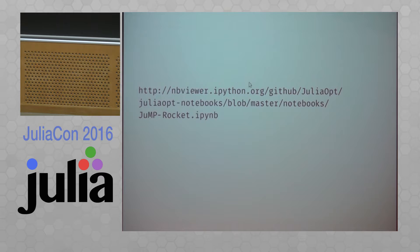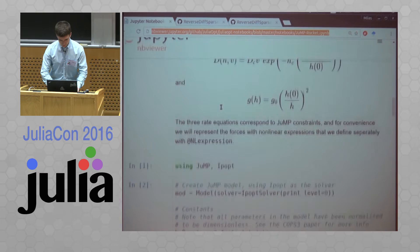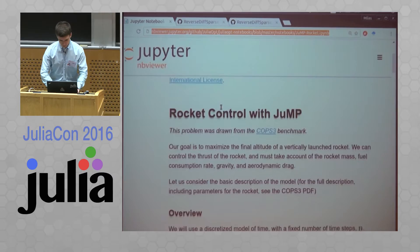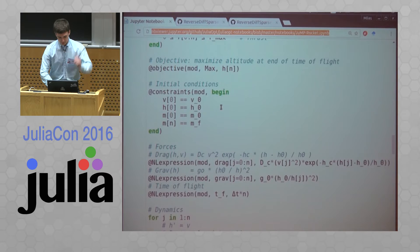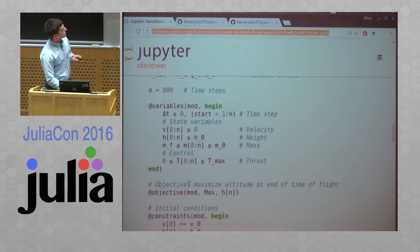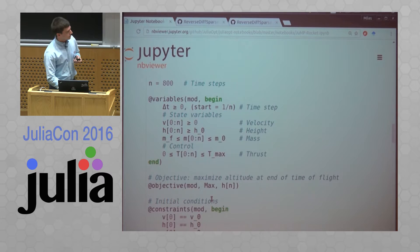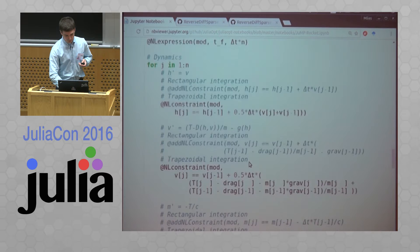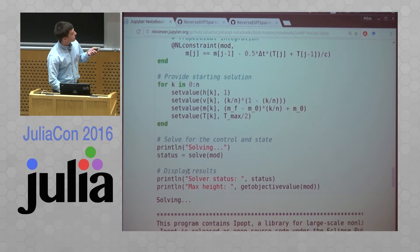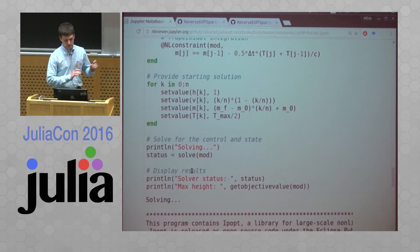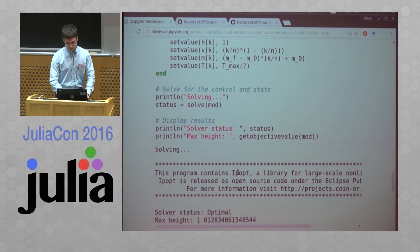Here's a quick example of what JuMP looks like. This is a tutorial notebook from last year's JuliaCon tutorial. It's a problem of optimizing the thrust output by a rocket launched vertically. You declare some optimization variables, set your objective function — say, maximize the altitude at the end of flight — add constraints, model your physics, discretize the laws of motion, provide starting points, then say solve. JuMP takes your algebraic model, hands it off to a solver — in this case IPopt — and IPopt goes out and solves your problem.